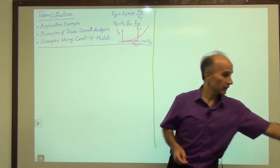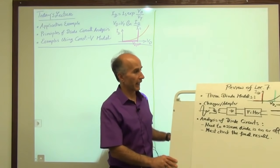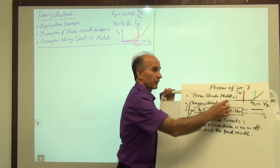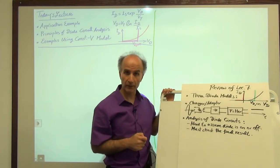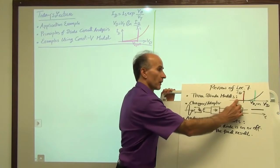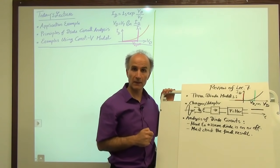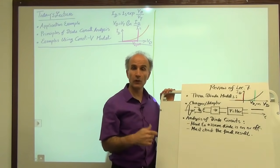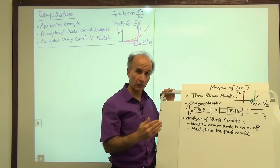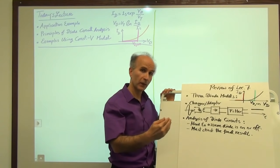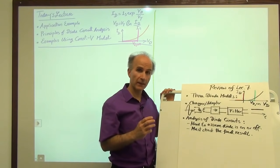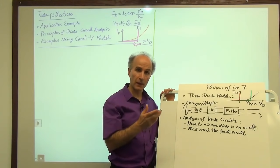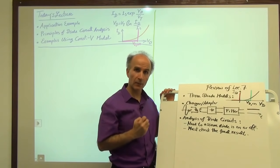If you recall last time, we said that a diode can have one of three models: the actual exponential model, which is relatively accurate but cumbersome in analysis; the constant voltage model, which is less accurate but easier to analyze; and finally, a very coarse model, namely the ideal diode model, which turns on only if the voltage wants to become positive. In most cases, we prefer to use the constant voltage model because it's a good trade-off between accuracy and simplicity of analysis.